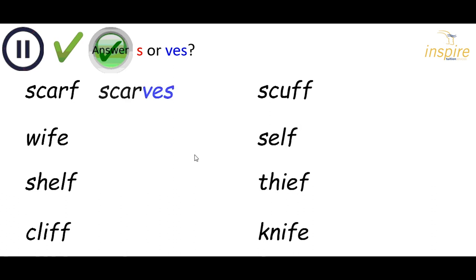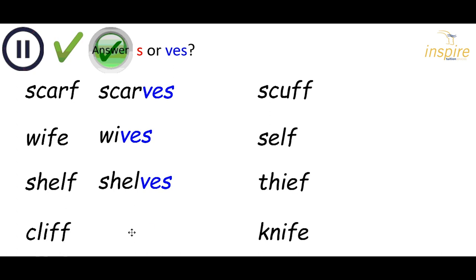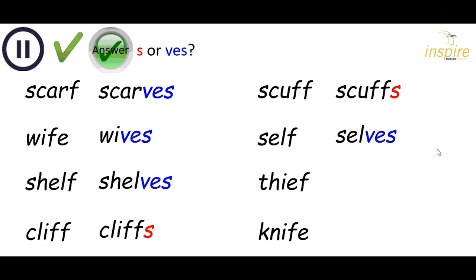So scarf will become scarves — change that F to VES. Wife ends in FE, but we still change the F to VES: wives. Shelf becomes shelves, changing that F again. Cliff has got two Fs — do you remember what we said? Just add an S for cliffs. Scuff, another one ending in two Fs — we have scuffs, just add an S. Self becomes selves, change the F to VES. Thief becomes thieves, change the F to VES. And knife — remember this one — becomes knives, change the F to VES.